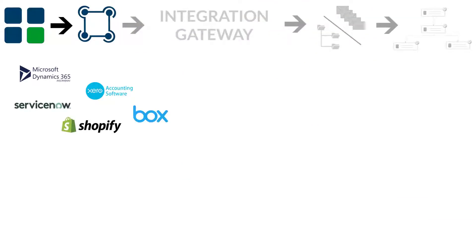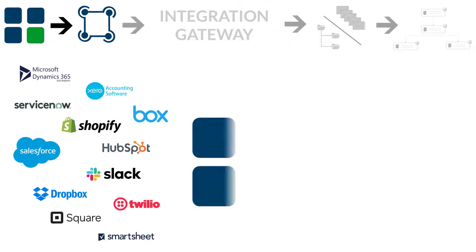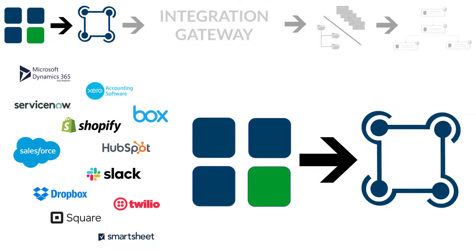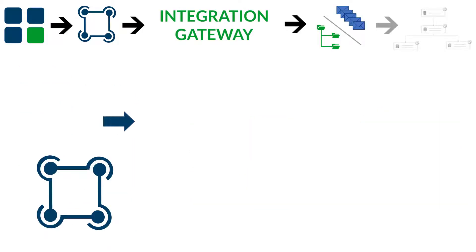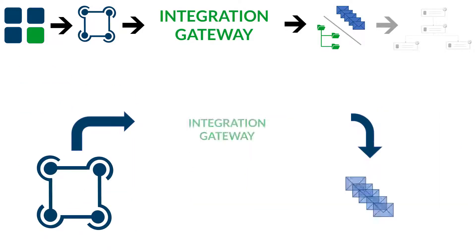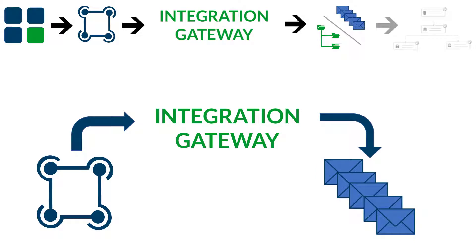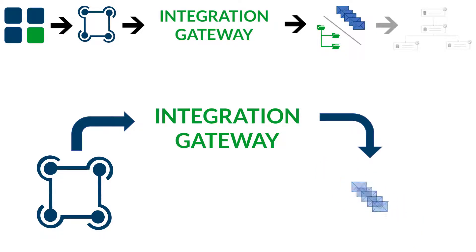Modern cloud-based applications publish changes through webhooks. Integration Gateway works as a hub between webhooks and message queues or file systems. The received webhook messages are posted to a message queue or file system in real-time.